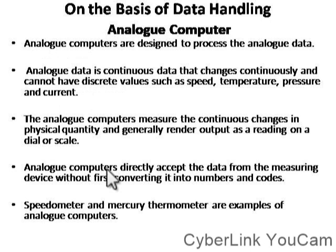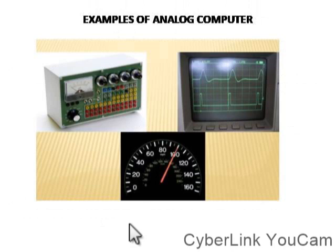First, analog computers are designed to process analog data. Analog means the data is continuous — it changes continuously and cannot have discrete values, such as speed, temperature, pressure, and current. Analog computers measure continuous changes in physical quantity and generally render output as a reading on a dial or scale. Analog computers directly accept data from a measuring device without converting it into numbers or code. Examples include the speedometer and mercury thermometer.